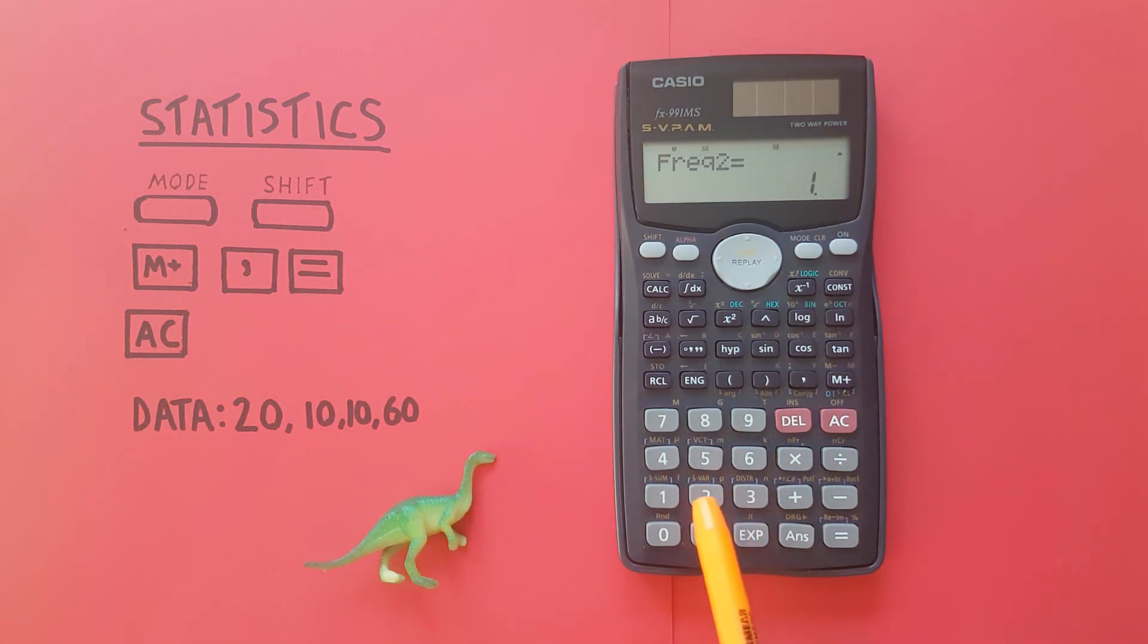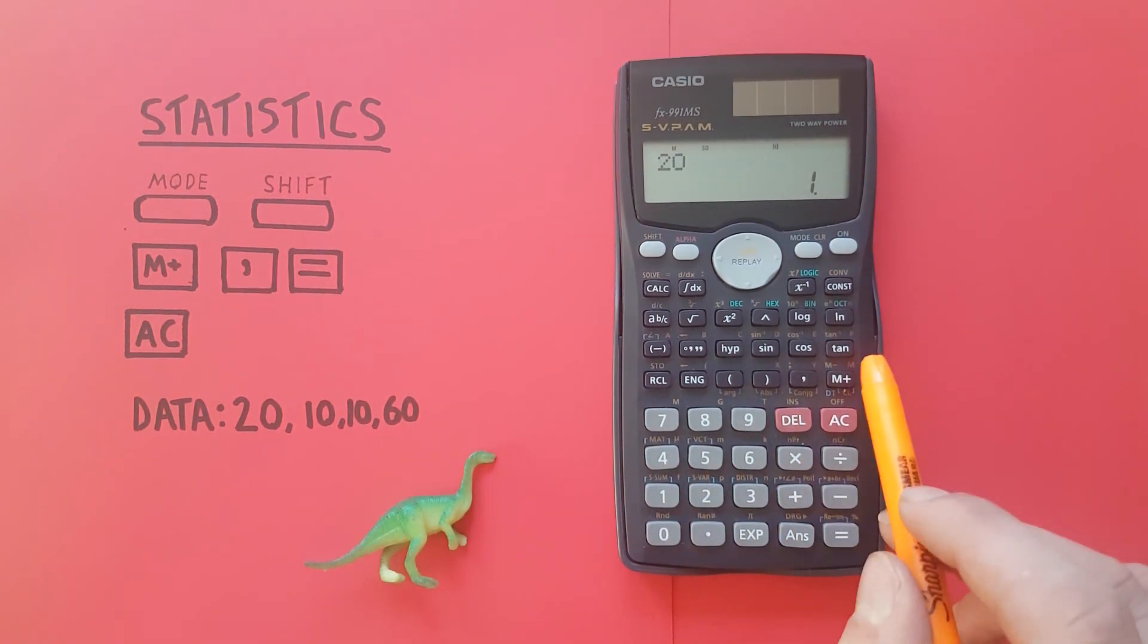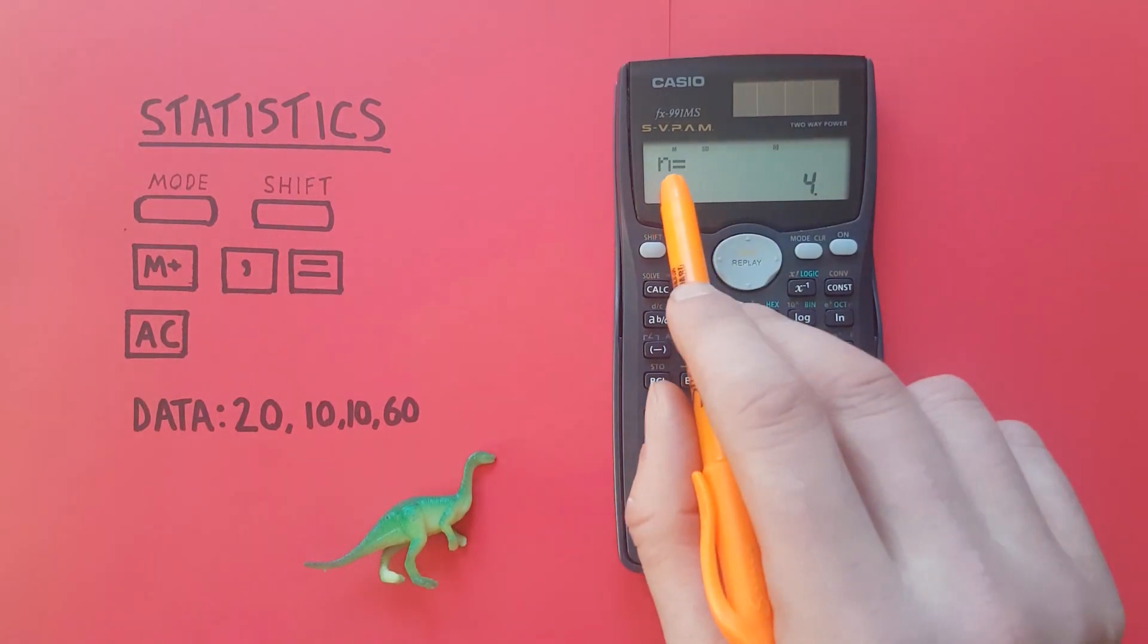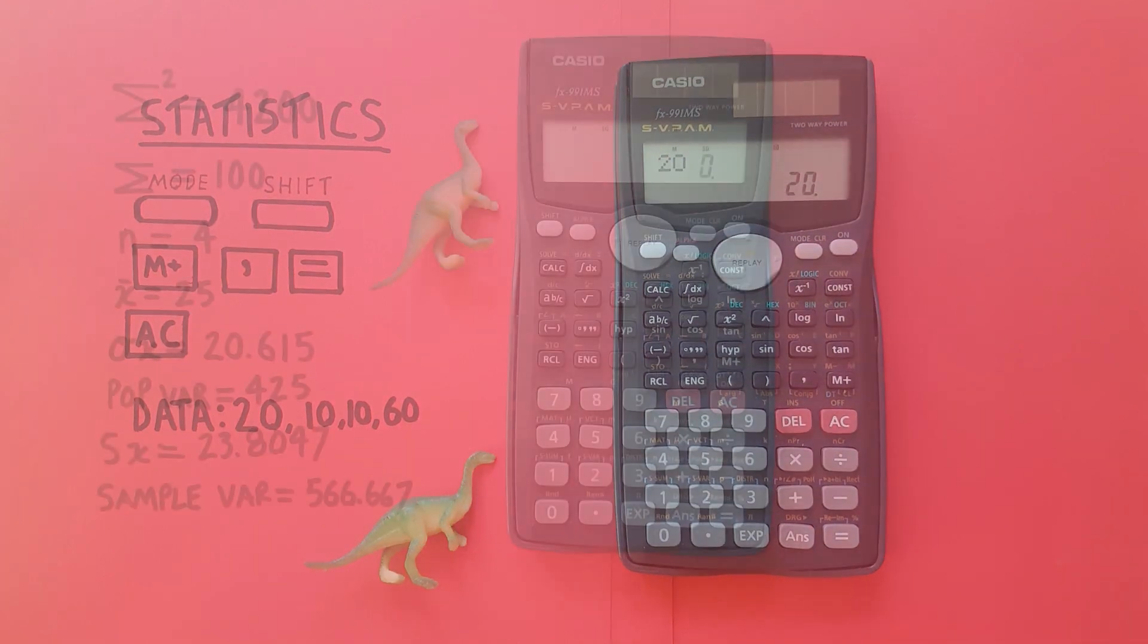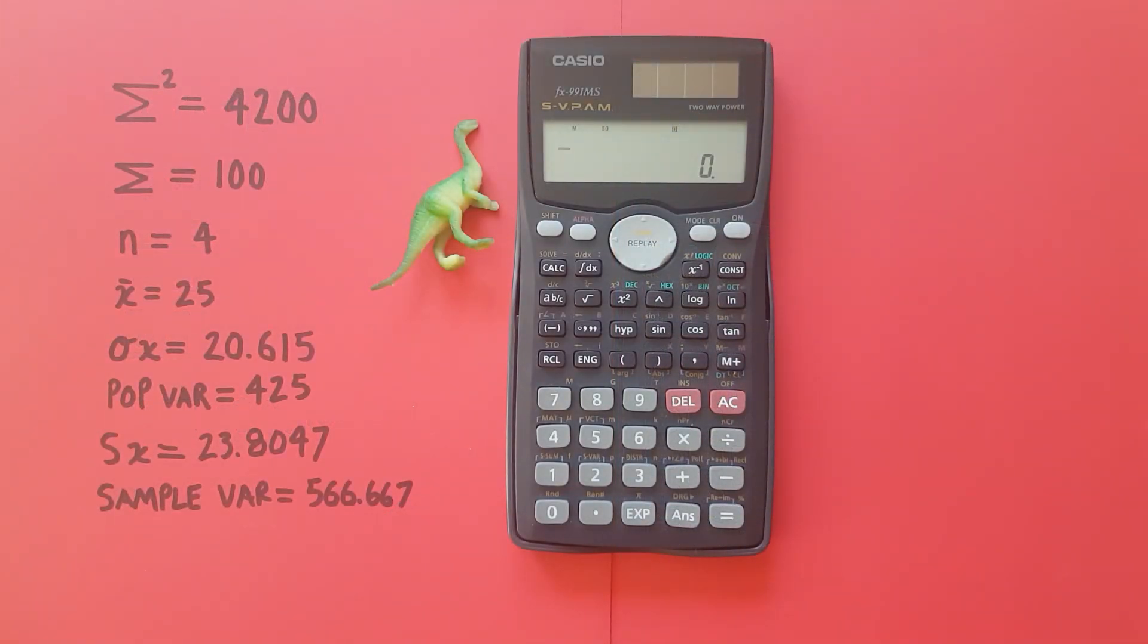But let's put that 20 back in just for the sake of our data set. M plus, there we go n equals 4. And when we have everything entered we can press equals. All right now we're ready to look at some statistics.